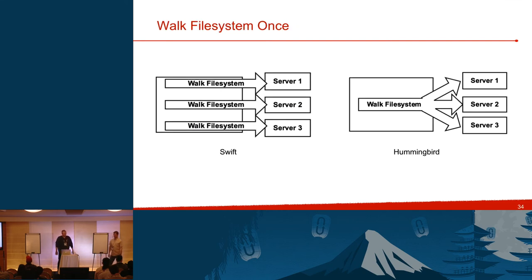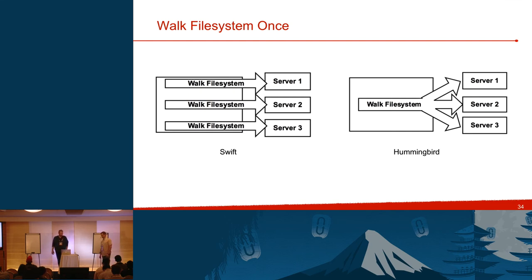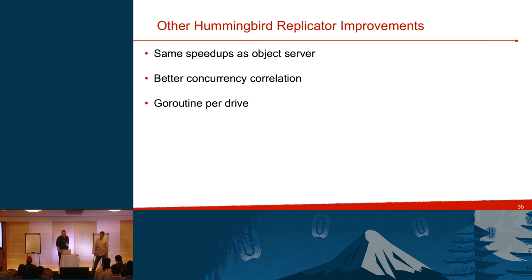We added new nodes but couldn't fill them up, and existing at-capacity nodes were not draining until we released Hummingbird. Another change: Swift walks the file system three times when replicating a partition to multiple peers. With the Hummingbird replicator, we walk the file system once and replicate to any peers that need the files as we go. The Hummingbird replicator also gets the same speed-ups as the object server — 75% less CPU, and each drive gets its own goroutine for isolation.